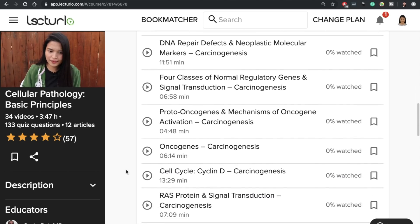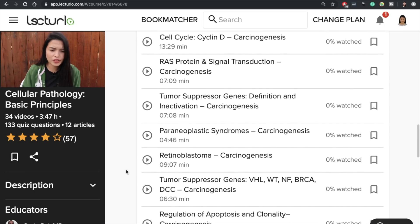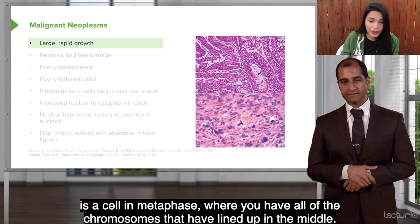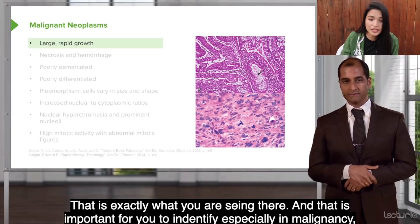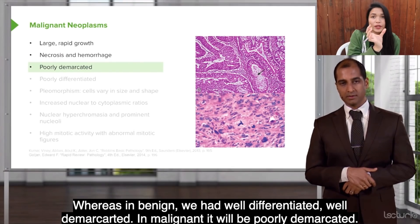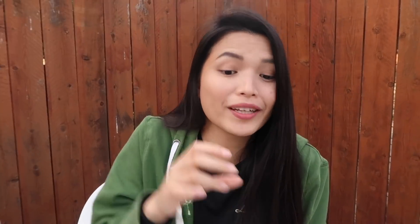Topics include proto-oncogenes, the cell cycle, cyclin D, Ras protein, and tumor suppressor genes. Let's look at a lecture on malignant neoplasm. We also studied this in first year, but we studied the normal version in histology. You have to be familiar with how tissue looks when it's normal so that you can appreciate what it looks like when it's pathologic. Without a good foundation, you won't realize the difference quickly — that's why it's important to study well in first year. You'll need a lot of basic concepts from first year to appreciate what you study in second year and beyond.